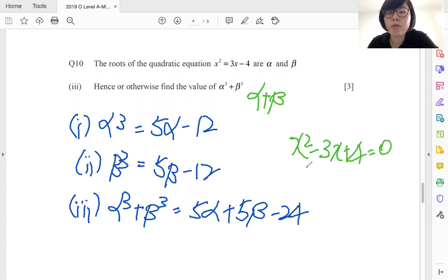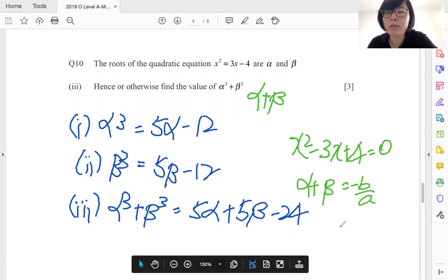Now sum of roots, if you recall, in this case it will be alpha plus beta is equals to minus b over a. And what is my b? My b is simply coefficient of my x. In this case it's negative 3, and what is my a? My a is coefficient of my x squared, which is one. So alpha plus beta is simply giving me three.